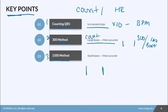The third method is the 1500 method — pick two QRS complexes, count every small box in between, and divide 1500 by that number of small boxes. This method is the most accurate because it is the most specific, the 300 method is in the middle, and counting the QRS is the least accurate.